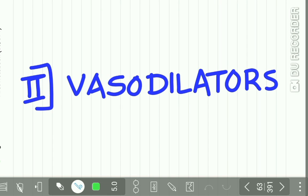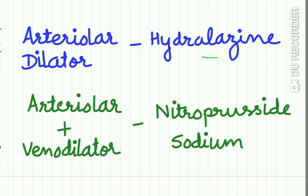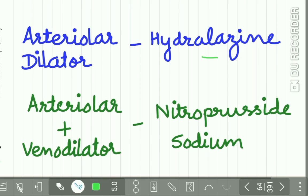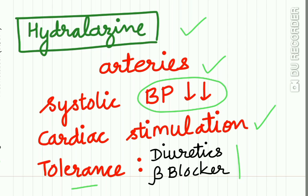The vasodilators are of two types: arteriolar dilators including hydralazine, and arteriolar plus venodilators including sodium nitroprusside. Hydralazine acts on arteries; systolic BP is lowered more than diastolic. Cardiac stimulation may occur, which can precipitate angina. Tolerance may develop, so it is given in combination with a thiazide diuretic or a beta blocker.